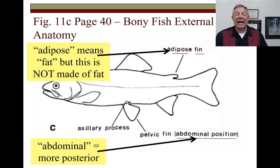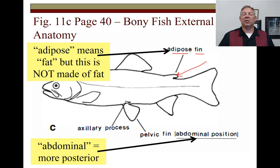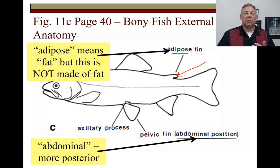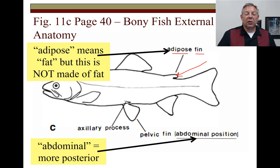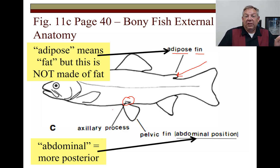Here's a special kind of fin that only a few species have. In Kentucky, it's just the catfish and the trout that have this adipose fin. Adipose usually means fat — it was originally thought to store fat, but it's not; it's a little muscle, though it's still called the adipose fin. In this drawing, the pelvic fins are set more posterior — that's the abdominal position. Some species also have a little projection above the pelvic fin called the axillary process.